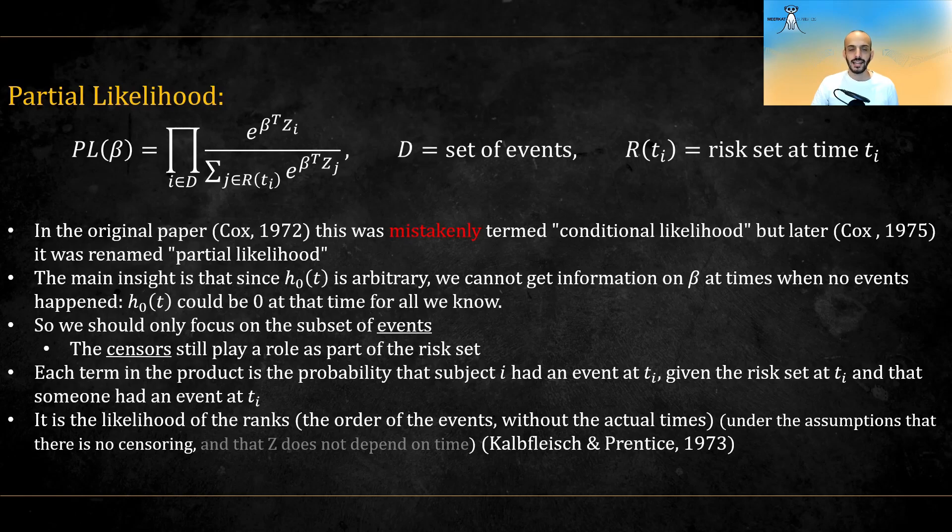The main insight is that since h0 is arbitrary, we cannot get any information on beta at times when no events happen. h0 could be zero at that time for all we know. So we only focus on a subset of the events, not the censors, though the censors still play a role as part of the risk set.